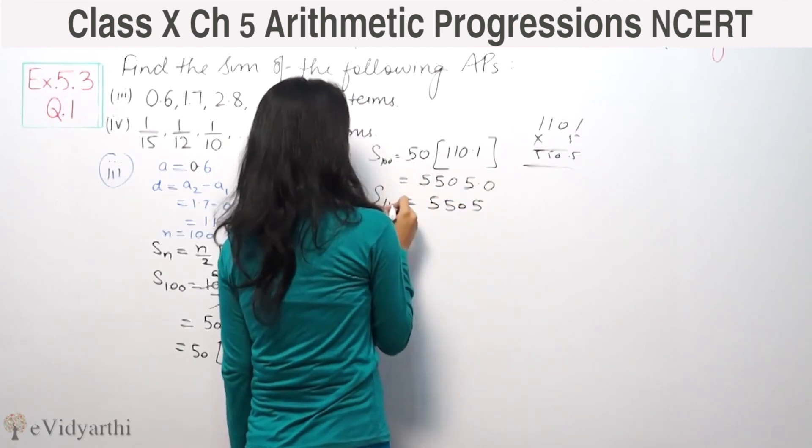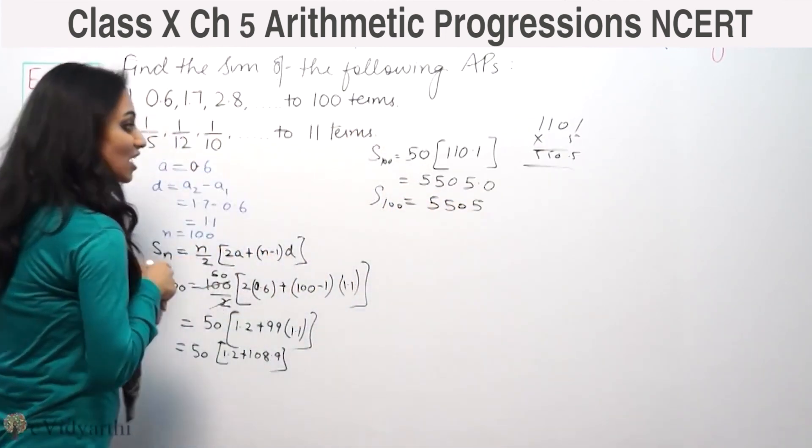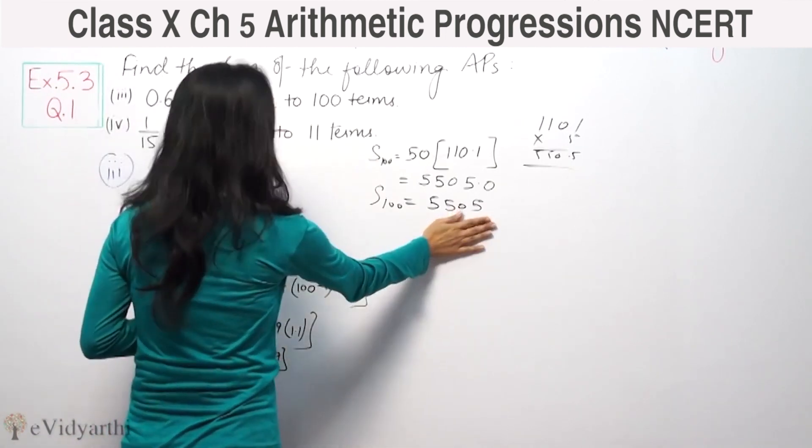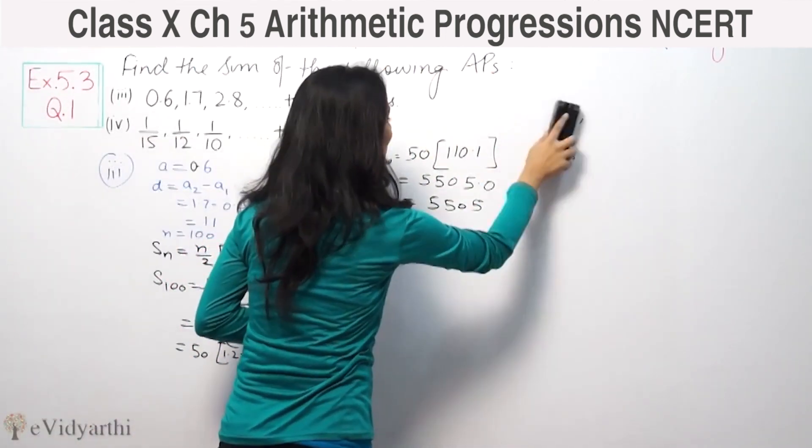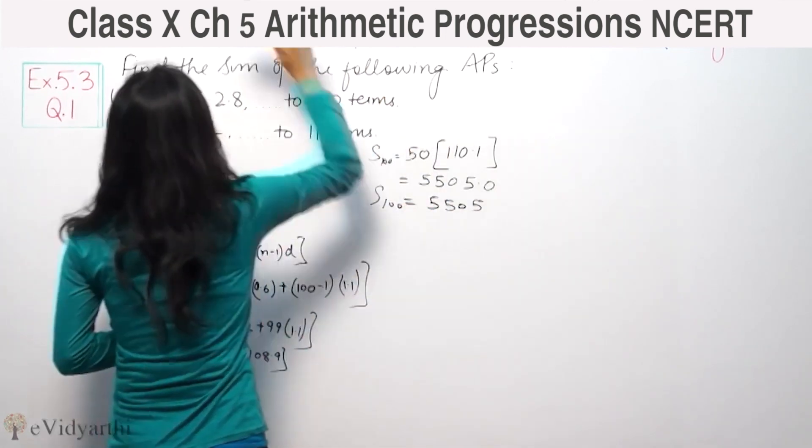This is our first 100 terms sum, which is 5505. Now, same way for part number 4.